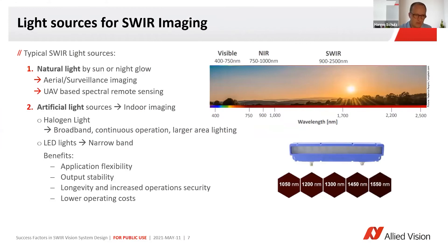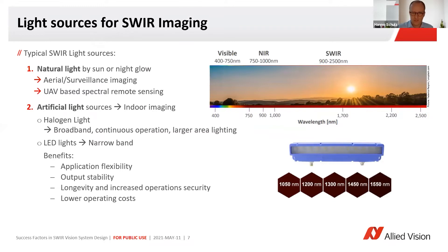For a number of applications, like the surveillance one, or Sebastian also mentioned one with drone-based agricultural things, you would more often than not use natural light for that. The good news with natural light is it's free, and it's also across the entire wavelength — the light of the sun is not just limited to the visible range, but does cover also the entire sphere spectrum.